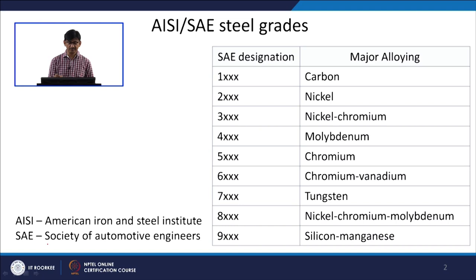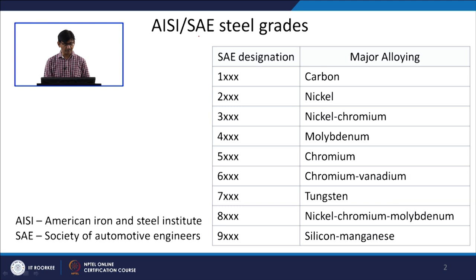In alloy designation, the first alloy of utmost importance and widely used is steel. There are different grades of steel available, and these are given by designations provided by two agencies: AISI, the American Iron and Steel Institute, and SAE, the Society of Automotive Engineers. These two agencies are responsible for making the designations for the grades of different materials.